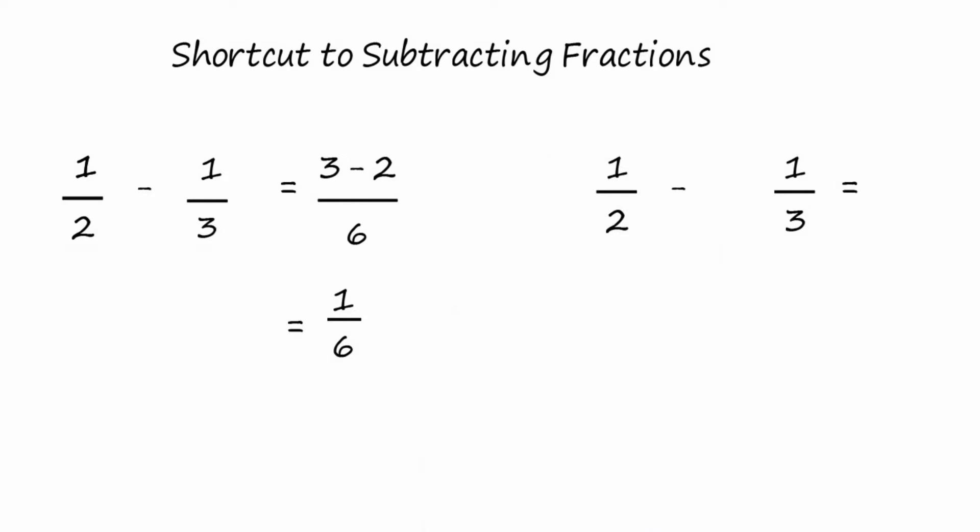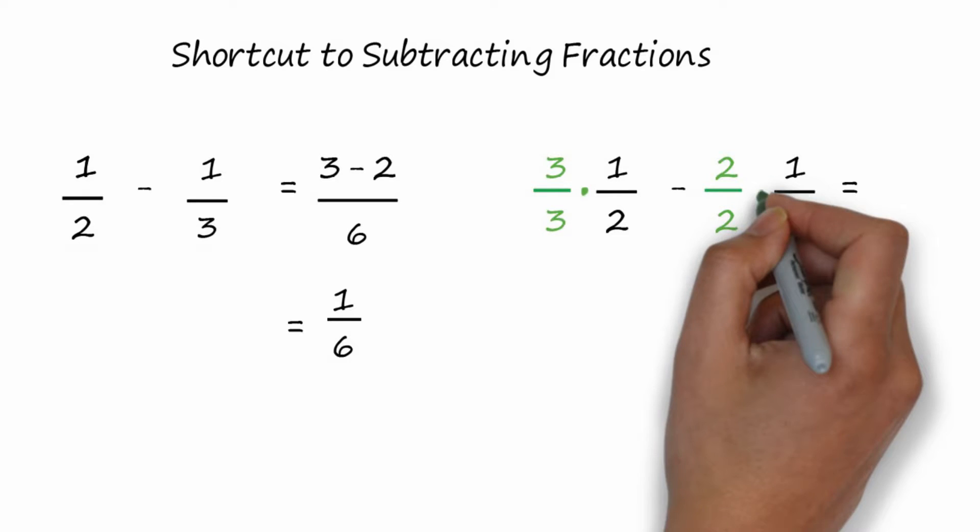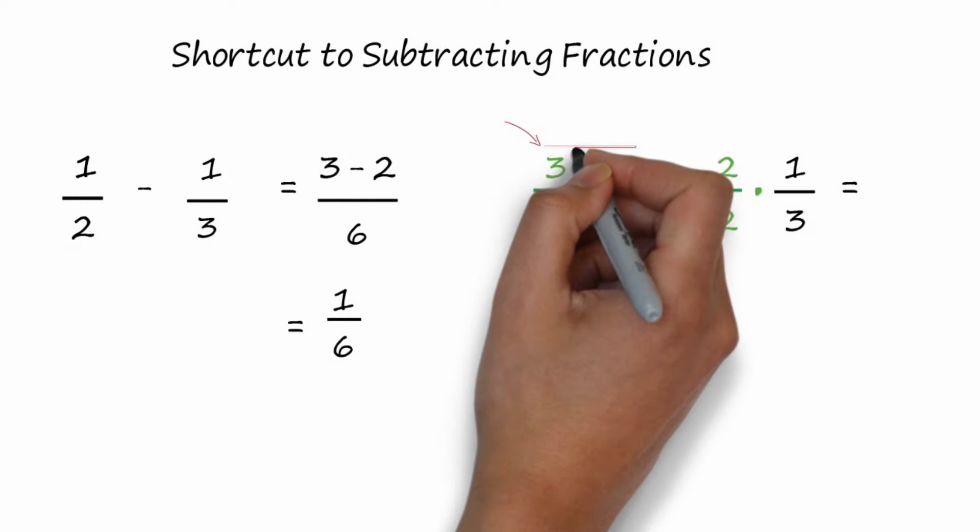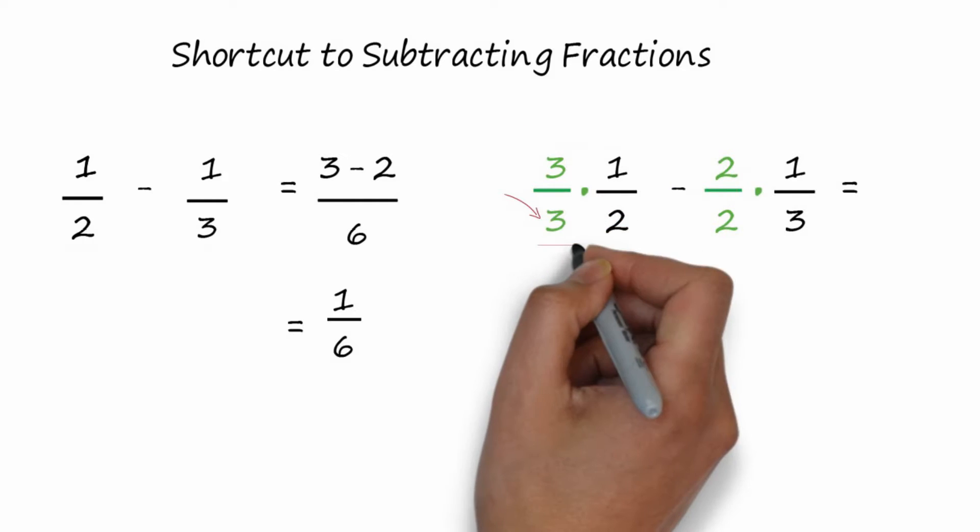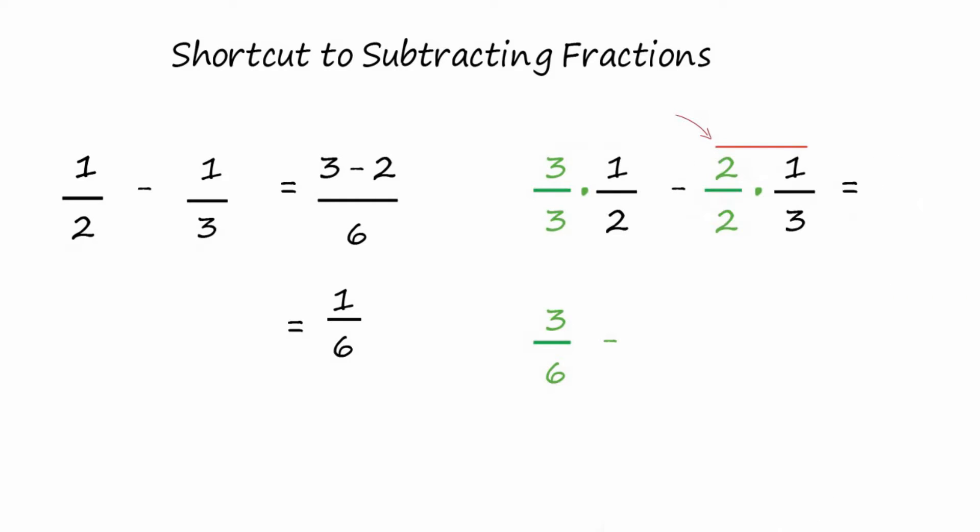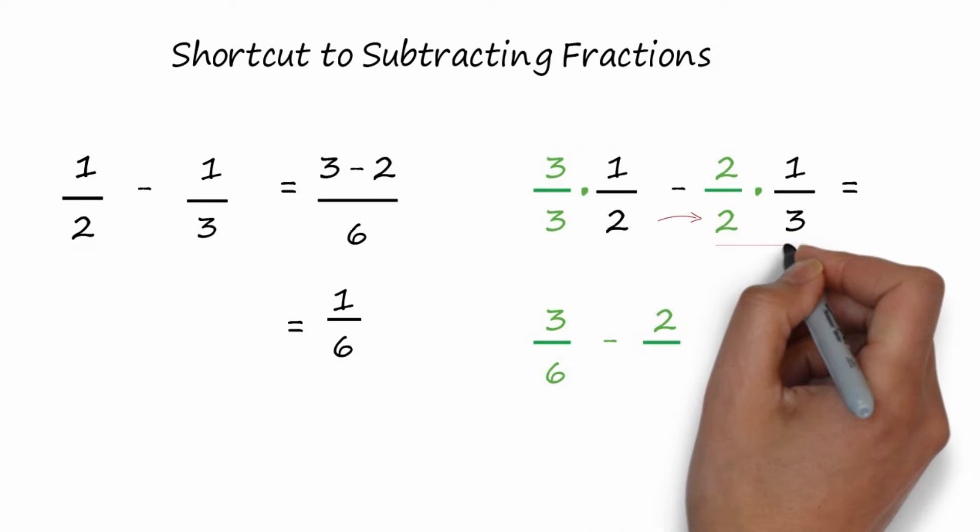So we multiply the first fraction by three over three, and then we multiply the second fraction, the one-third, by two over two. Then we multiply the top of the first fraction, three times one is three, and multiply the two bottom numbers, three times two is six. Then we multiply two times one for two, and three times two is six again.